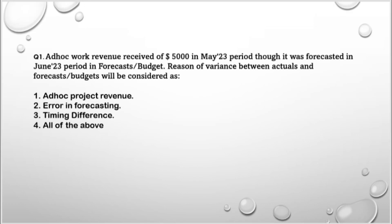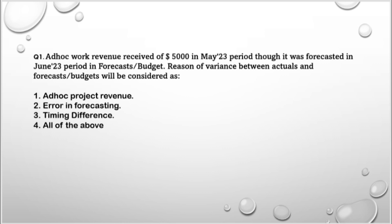Starting with Question 1: Ad hoc work revenue of $5,000 was received in the May 2023 period, though it was forecasted in the June 2023 period. That means we expected the revenue to be earned in June and forecasted it there, but since the work was completed and all considerations performed, we received the $5,000 revenue in May. The reasons for the variance between actuals and forecast will be considered as: (1) Ad hoc project revenue, (2) Error in forecasting, (3) Timing difference, (4) All of the above.